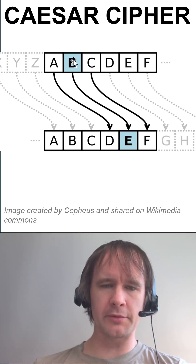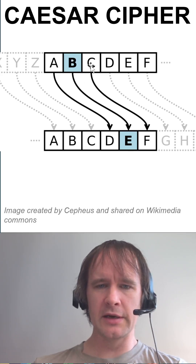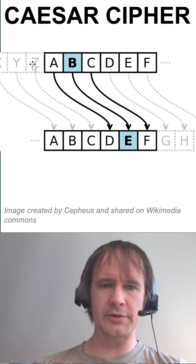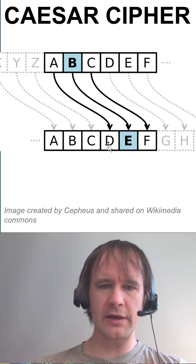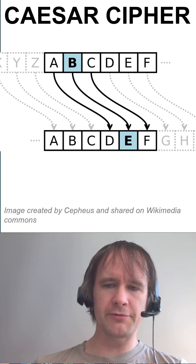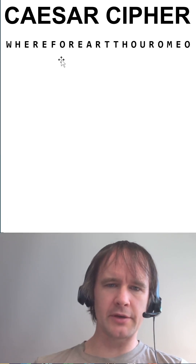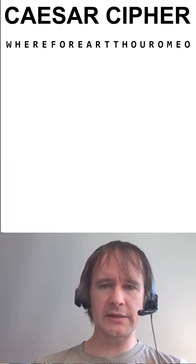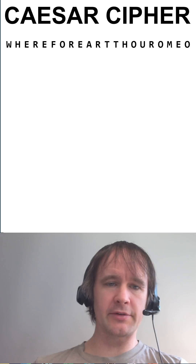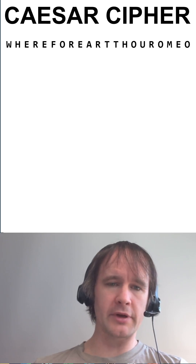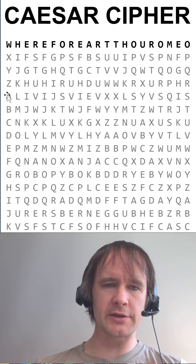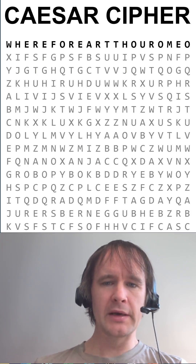So like here with a shift of 3, B goes to C, D, E. C goes to F, and it wraps around the alphabet. So X, Y, and Z go to A, B, and C.